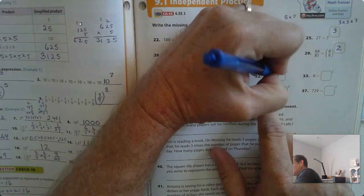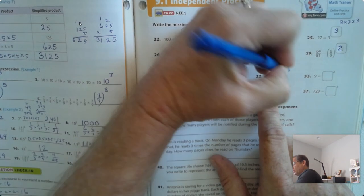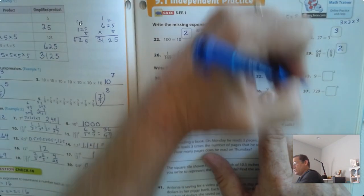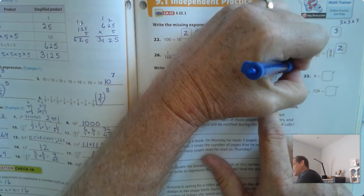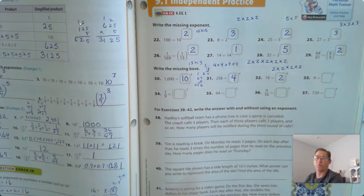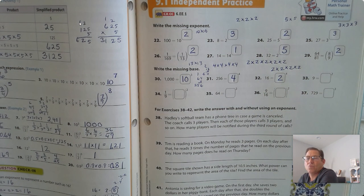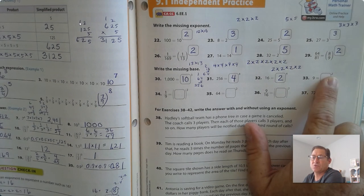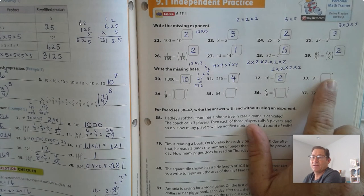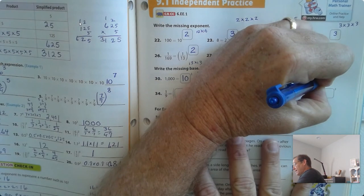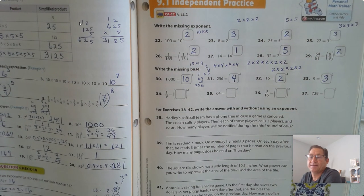2 times 2 is 4, 4 times 2 is 8, and 8 times 2 is 16. So 2 to the fourth power. What number times itself would give us 9? I know it's times itself because it says squared. So the only number times itself that would give us 9, and that is a factor of 9, is 3.